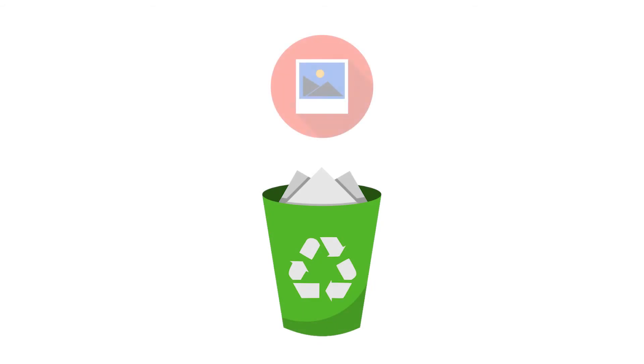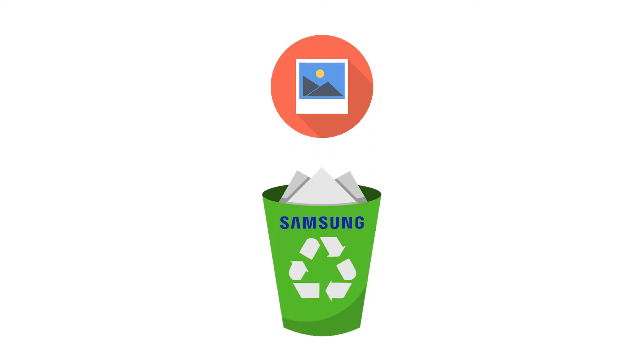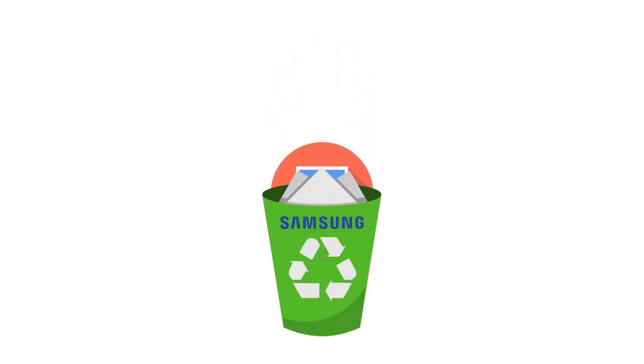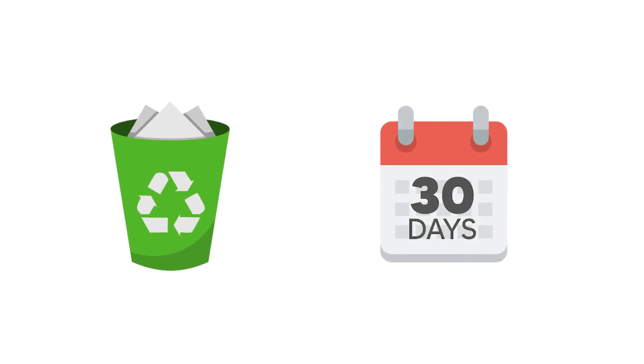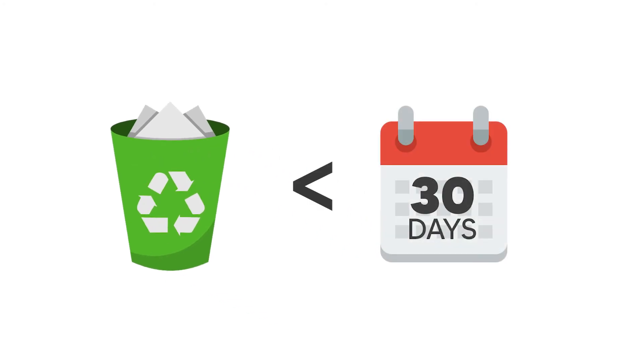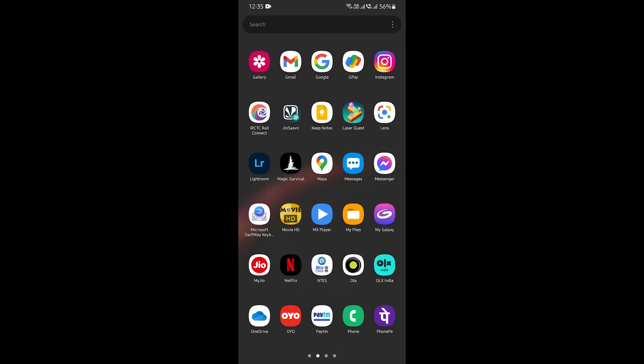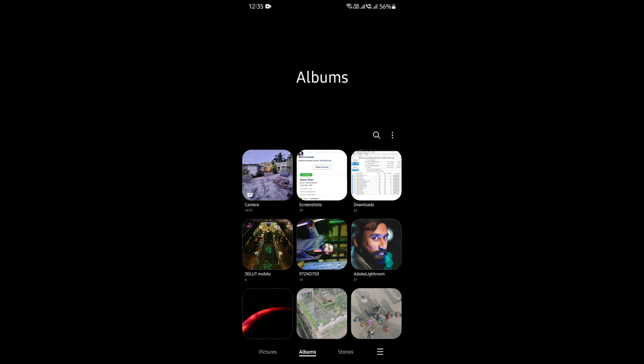You can restore deleted photos from the Samsung Gallery trash if they are not more than 30 days old. Go to the Gallery app on your Samsung device and click on the options at the bottom right corner. Some devices might also have this option at the top right corner, depending on the firmware version.